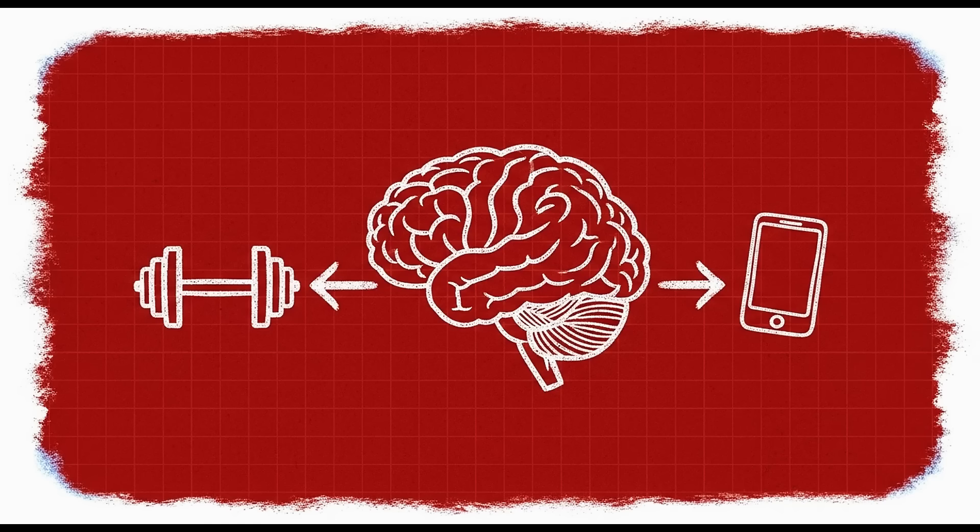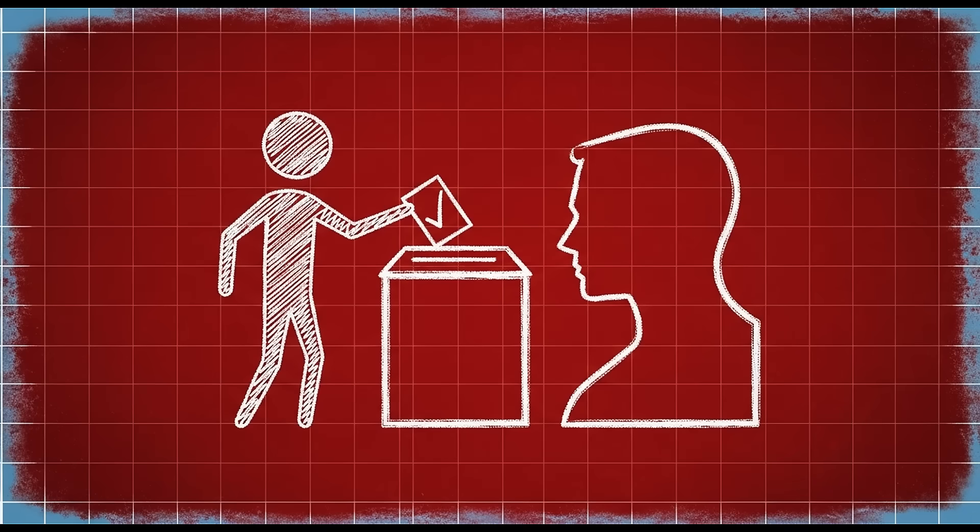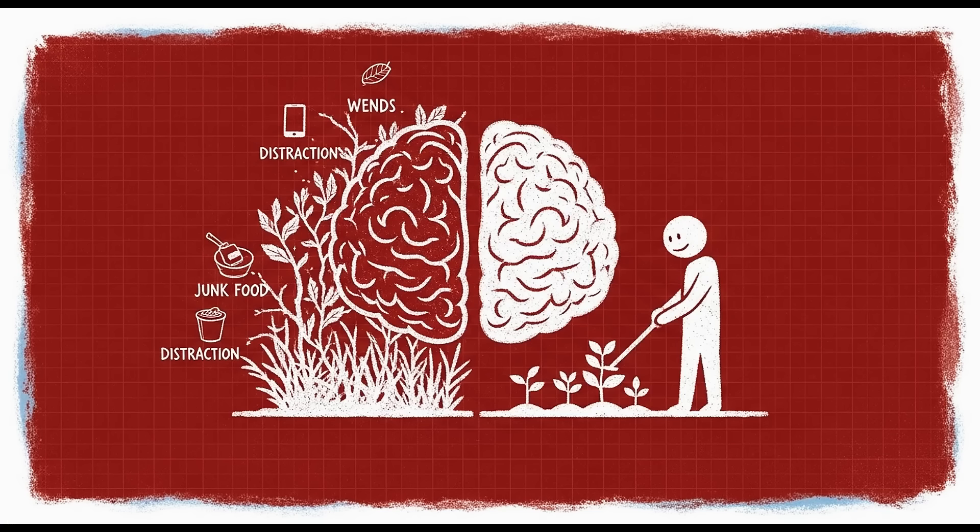But the beautiful thing about neuroplasticity is that what can be broken can also be fixed. Your brain is constantly rewiring itself based on what you do. Every choice you make is either strengthening neural pathways for discipline or reinforcing pathways for distraction. The question isn't whether your brain will change, it's which direction you're pushing it.